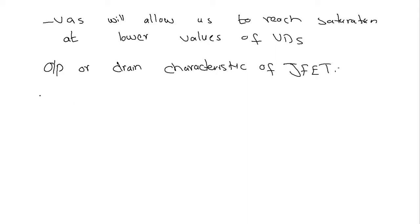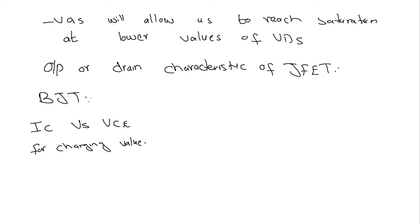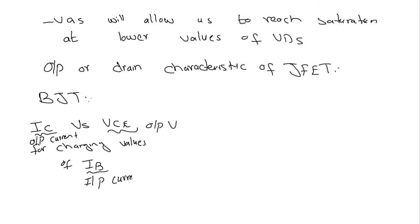If you remember, in the case of the bipolar junction transistor we had output characteristics which was IC versus VCE for changing values of IB, where IB was the base current. So IC was the output current, VCE was the output voltage, IB was the input current and controlling parameter, and IC was the controlled parameter.